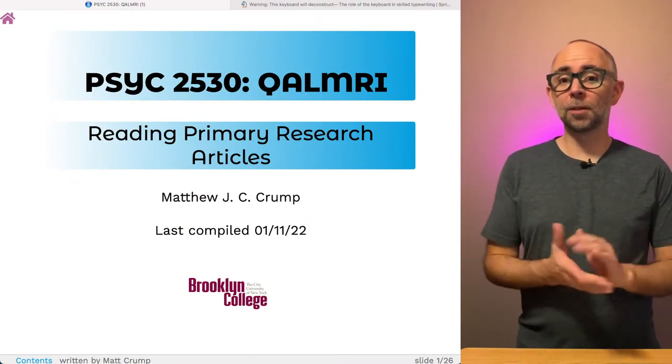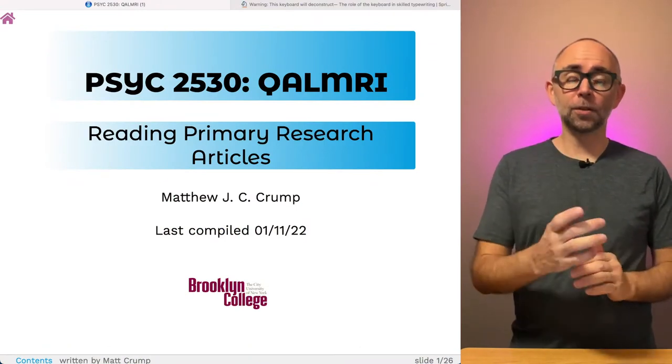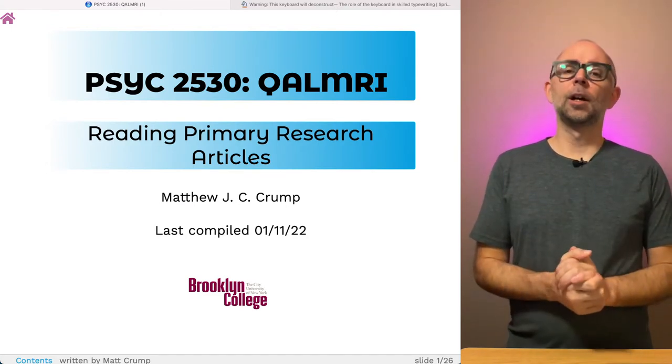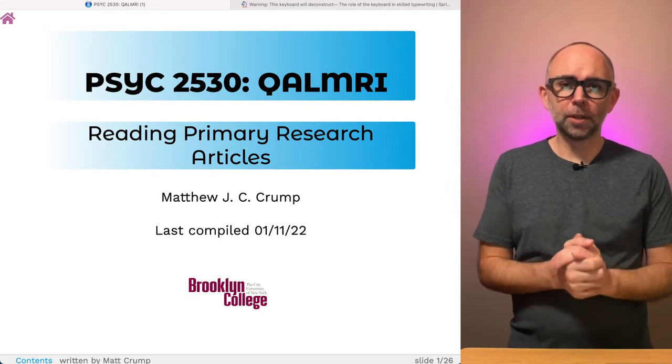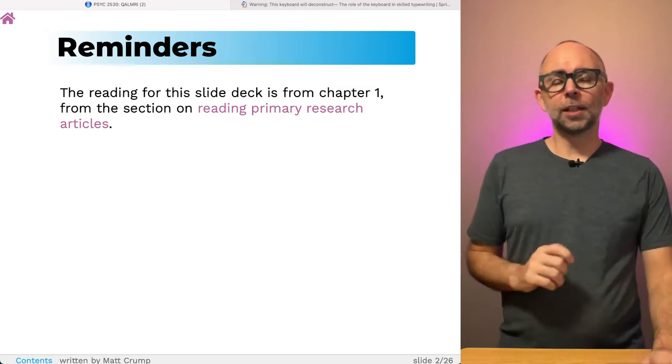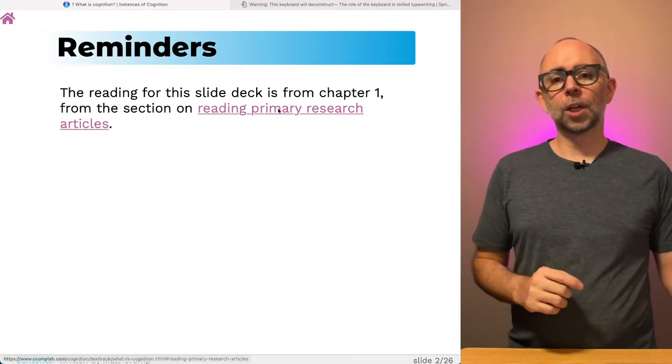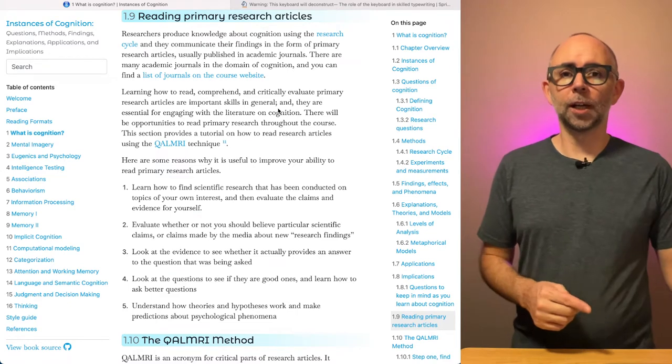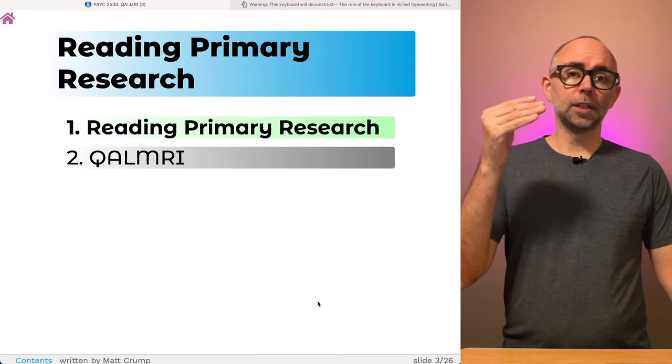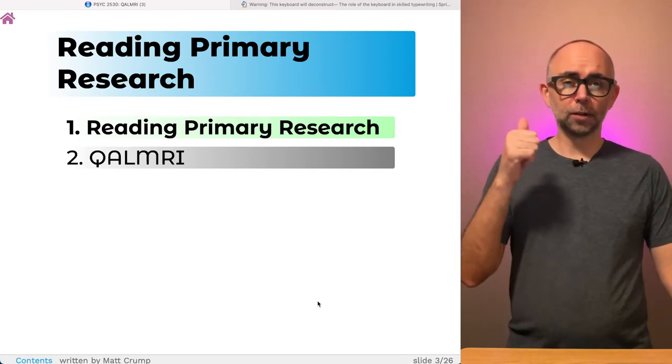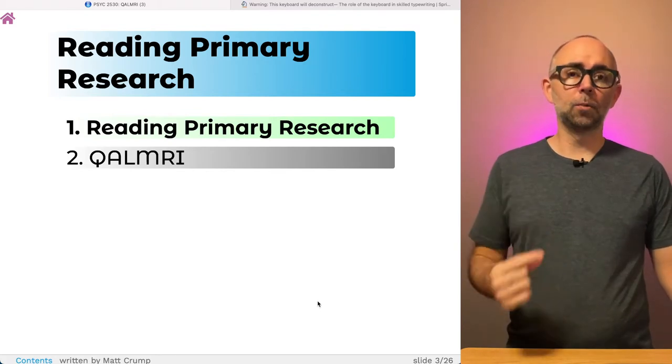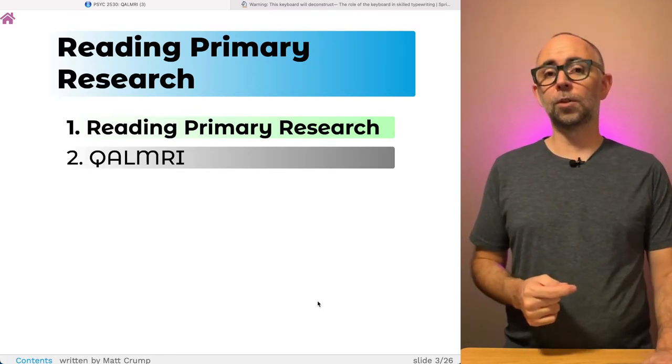Hello and welcome back. This is Matt Crump. We are in the first learning module for Psyc2530, and this one is about how to read primary research articles. We're going to be talking about the QALMRI method. There is an associated reading for this. You can check it out in the textbook. It's in section 1.9, so read that and follow along here. This is a pretty short lecture. We'll talk a little bit about why it's important to learn how to read primary research and cognition, and then we'll dive into the QALMRI method for doing so.